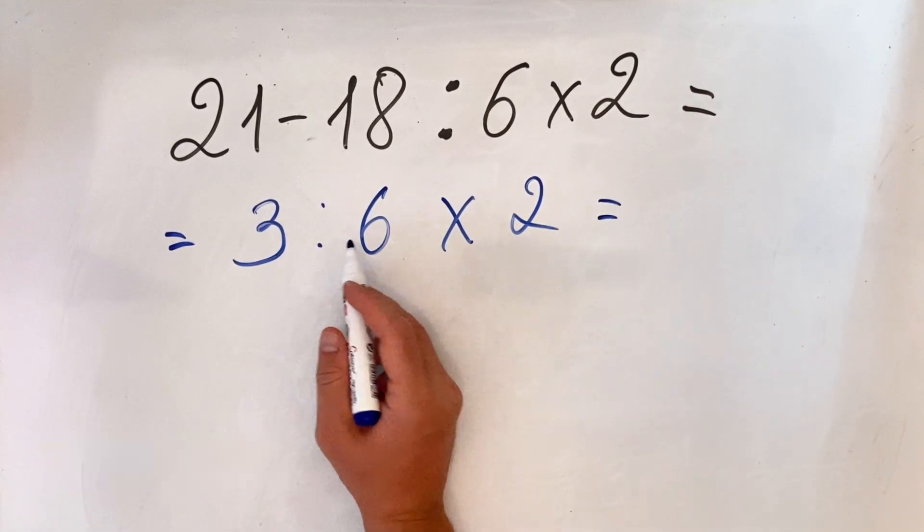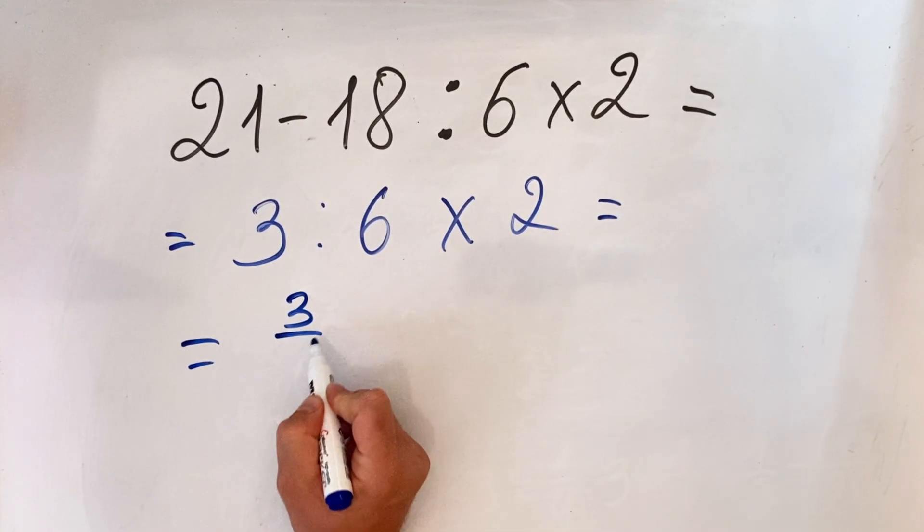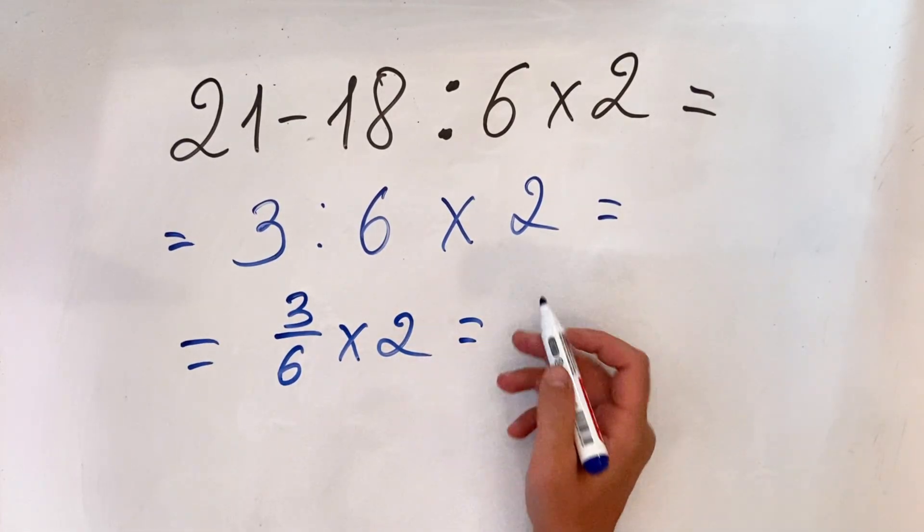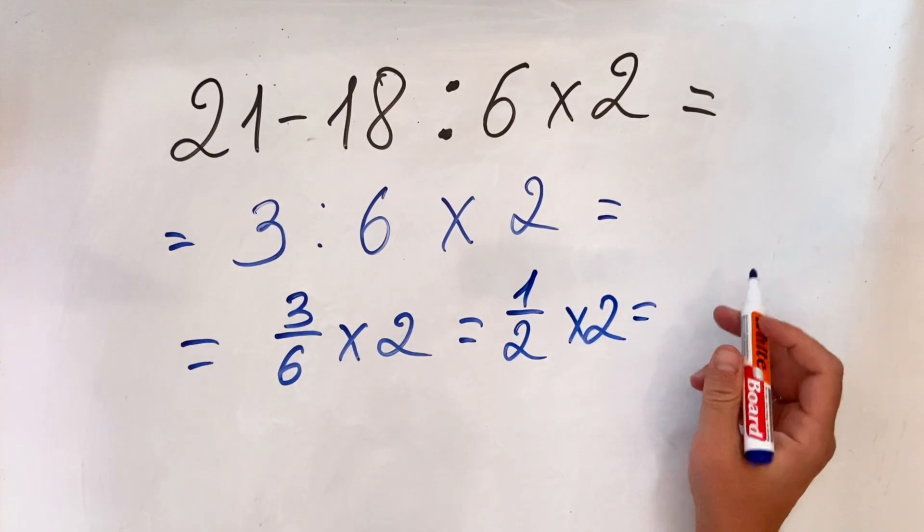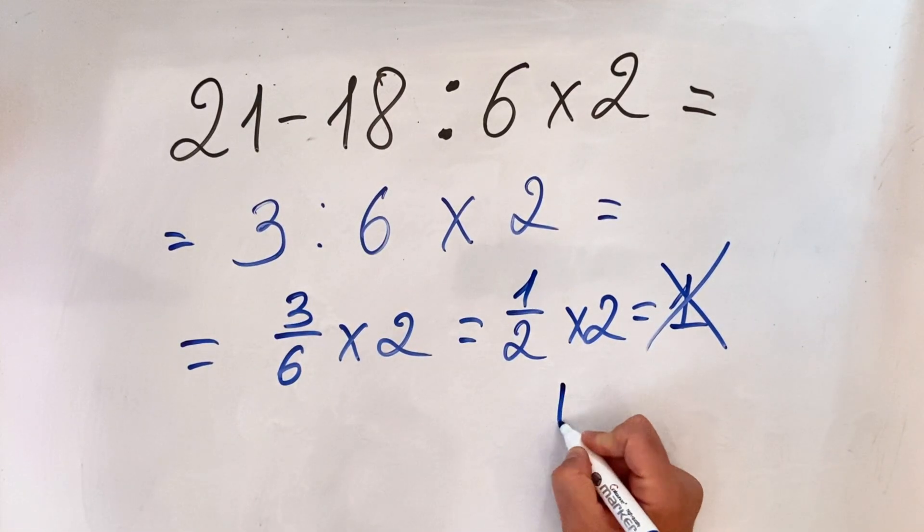Then they do the division and then the multiplication. So in this case, 3 divided by 6 multiplied by 2, and they get 1. But of course this is incorrect. Why? Because if you remember PEMDAS, the order of operations rules, P stands for parenthesis, which we must do first. If we don't have it, we skip it.